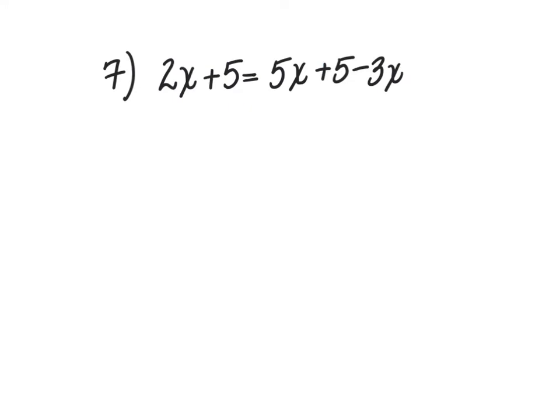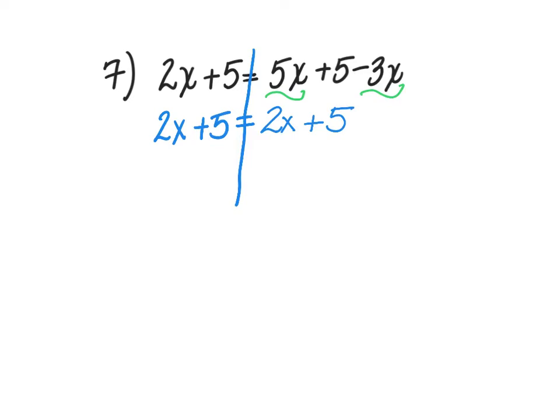Number 7 is 2x plus 5 is equal to 5x plus 5 minus 3x. On the left side, there's nothing to do — no like terms to combine, it's completely simplified. But on the right side, I have like terms I can combine. I have 5x and minus 3x. When I put those together, 5 minus 3 gives me 2x plus 5. Now it's time to get my variables together on one side and my constants together on the other.